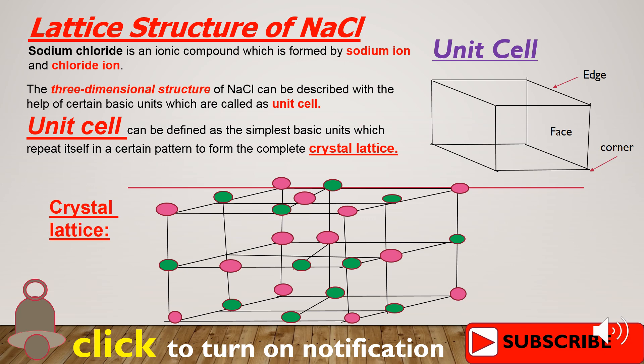As you can see, here is a diagram of the unit cell, having edges, faces, and corners. By definition, the unit cell can be defined as the simplest basic unit which repeats itself in a certain pattern to form the complete crystal lattice.